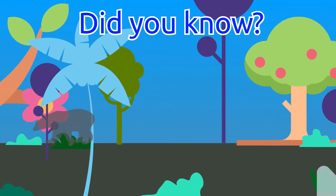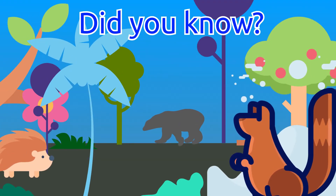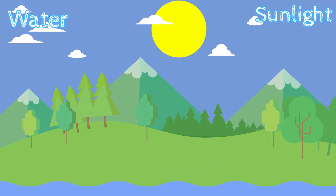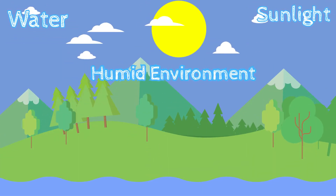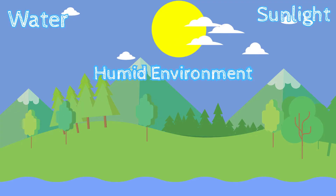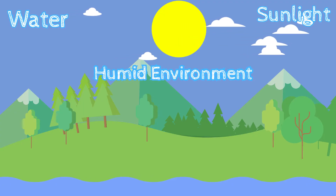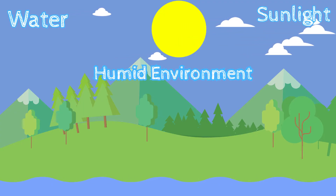Did you know that up to half of the world's species all live in tropical rainforests? Water, sunlight, and a humid environment are some of the factors that create the perfect living conditions for millions of species of plants and animals to thrive.